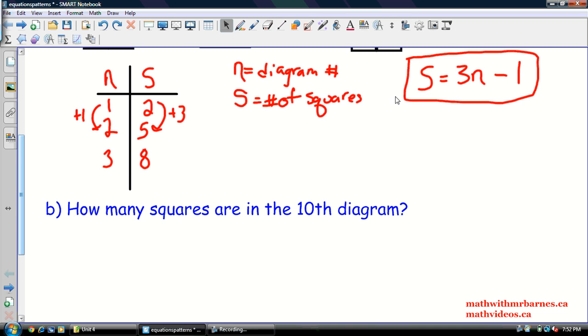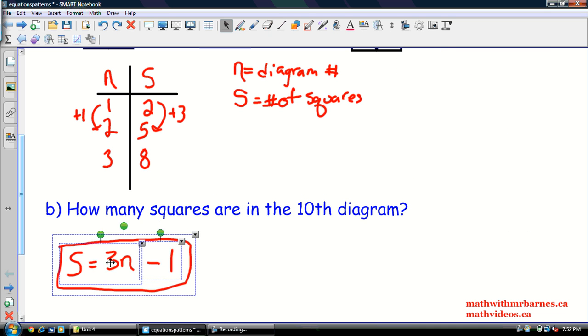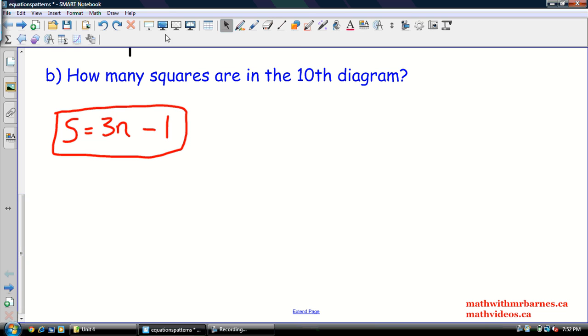So we know our equation. Maybe I can drag that down here. So we know, we're looking for the 10th diagram number. So that means n is equal to 10. So all we really have to do is sort of plug in the number there. So my number of squares is equal to 3 times 10 minus 1. And we got to follow the order of operations. Of course, we do our multiplication first. So we have 30 minus 1. And that, of course, is 29. So there are, in fact, 29 squares in that 10th diagram number.